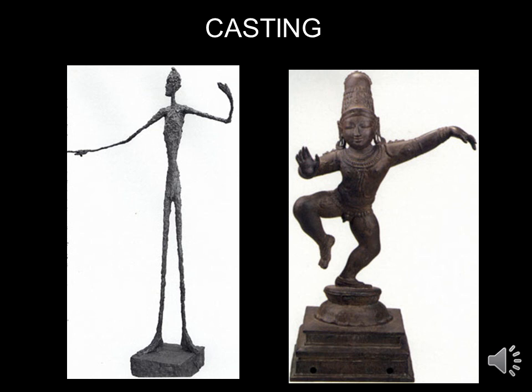These castings can weigh extremely large amounts. The two examples at the beginning of the lesson were a sculpture from Giacometti on the left — a man pointing, a bronze sculpture — and on the right is a dancing Krishna.